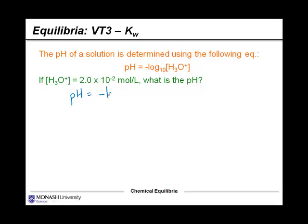We'll use our equation where pH equals the negative log base 10 of the H3O+ concentration. That's 2.0 × 10^-2 moles per liter. Sub that into the equation, and you should get a value of 1.7. Notice that the pH value is dimensionless.